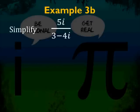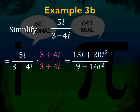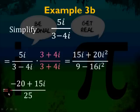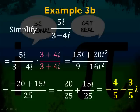Example 3b: 5i over 3 minus 4i. Multiply top and bottom by the conjugate 3 plus 4i. The numerator becomes 15i plus 20i squared, and the denominator becomes 9 plus 16, which is 25. You get negative 20 plus 15i over 25. Split into two fractions, reduce, and your answer is negative 4 fifths plus 3 fifths i.